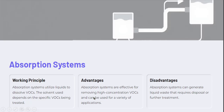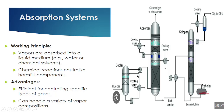The advantage of the absorption type is that it removes high concentrations of volatile organic compounds and can be used for a variety of gases. The disadvantage is that it generates a lot of liquid waste which requires further treatment. Absorption uses liquid mediums such as water or chemical solvents to treat the volatile organic compound through a scrubber tower. A chemical reaction occurs by spraying chemicals with the volatile organic compound, causing it to settle. It is then extracted and put back into use. It is efficient for controlling specific types of gases and can handle a wide variety of organic compounds.